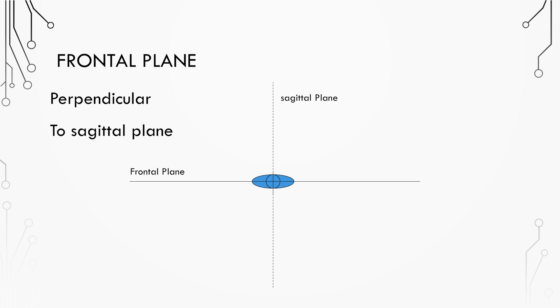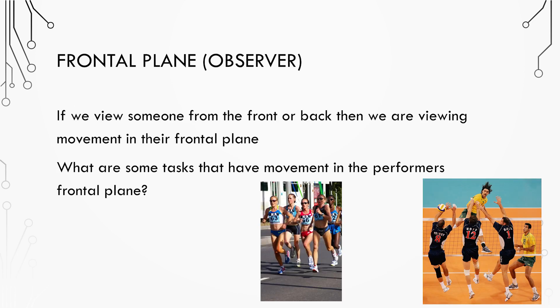If we view someone from the front or back, then we're viewing movement in the frontal plane. Examples of tasks where viewing movement from the frontal plane are useful could be tennis, squats, or agility tests.